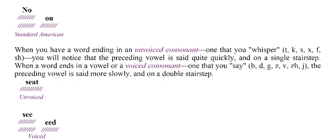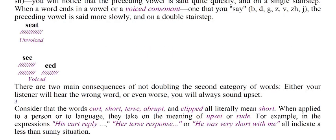For example: unvoiced — 'seat'; voiced — 'seed.' There are two main consequences of not doubling that second category of words: either your listener will hear the wrong word, or even worse, you'll always sound upset. Consider that the words curt, short, terse, abrupt, and clipped all literally mean 'short,' and when applied to a person or language they take on the meaning of upset or rude — as in 'his curt reply,' 'her terse response,' or 'he was very short with me.'